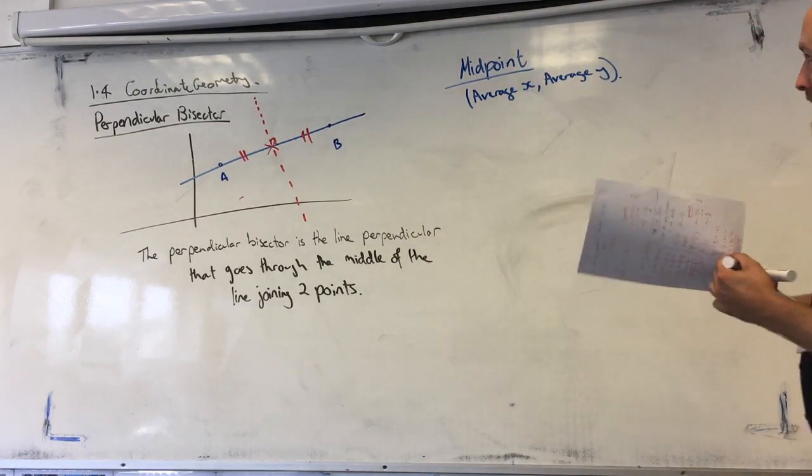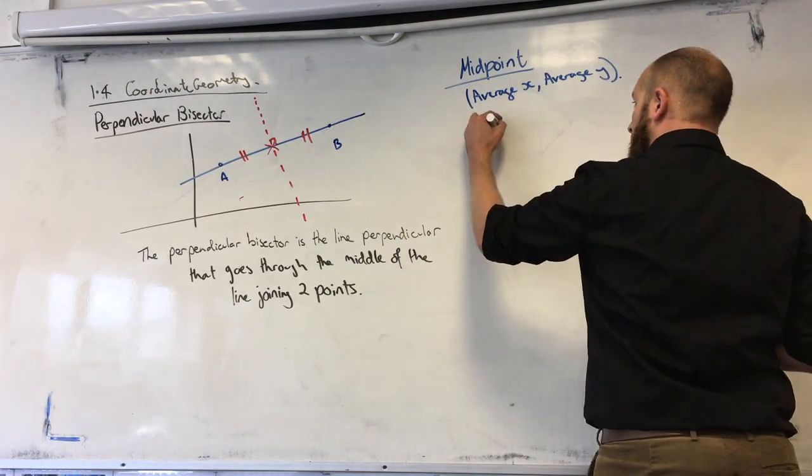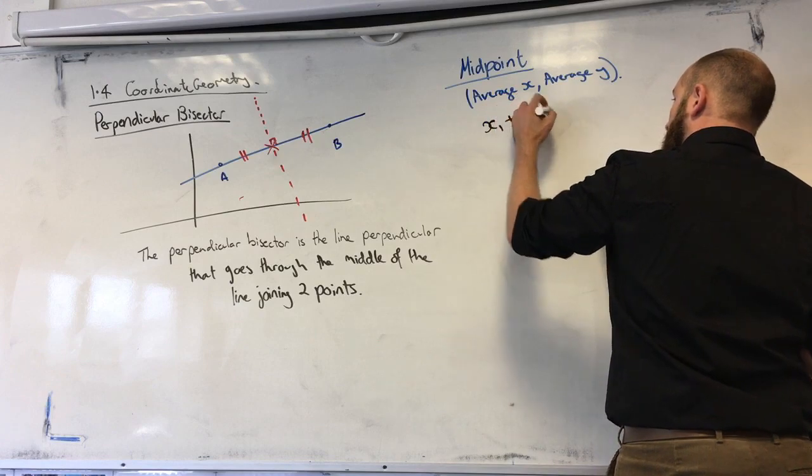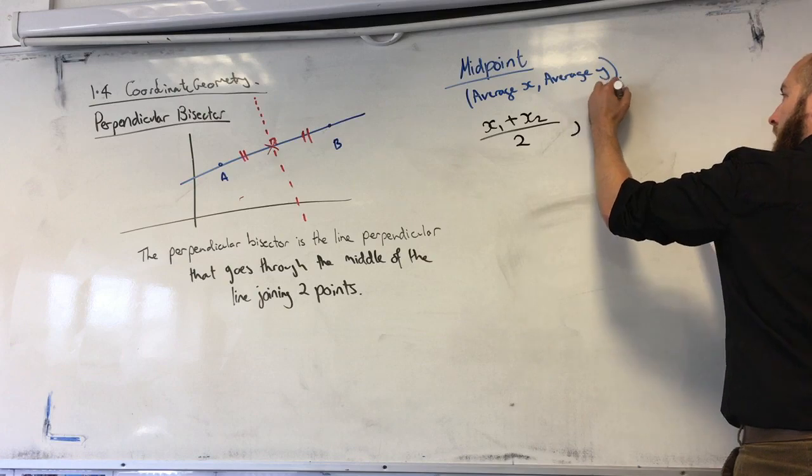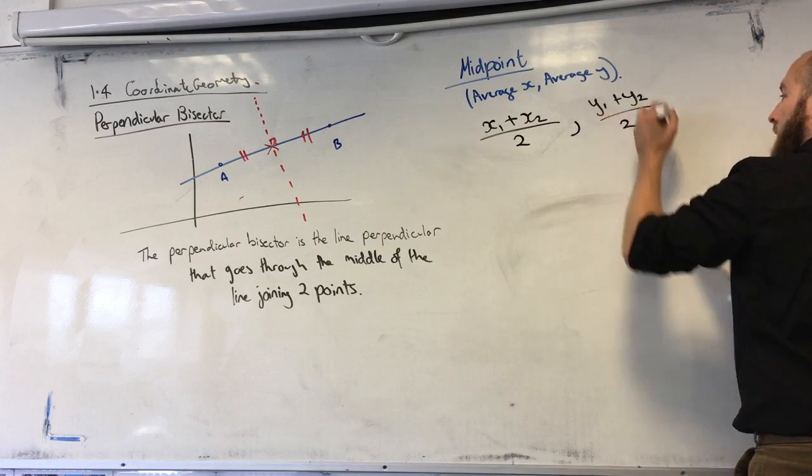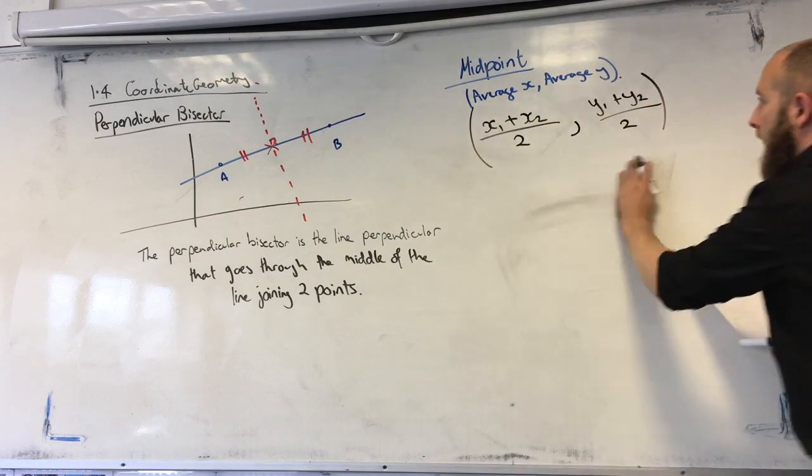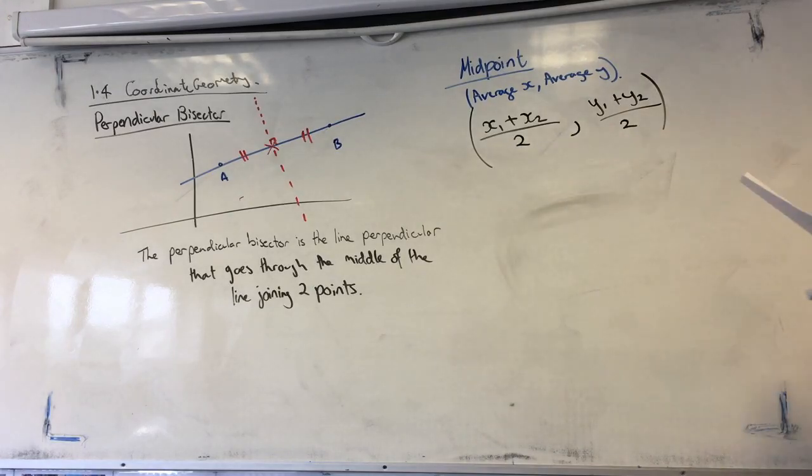So the average of the x-coordinates we can say is going to be x1 plus x2 divided by 2. The average of the y-coordinates is going to be y1 plus y2 divided by 2. And that will give you the midpoint as a set of coordinates.